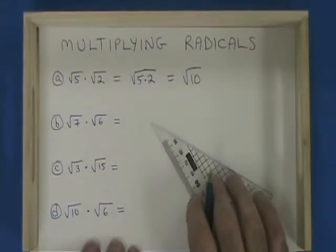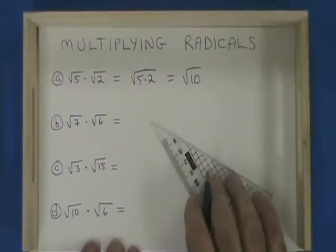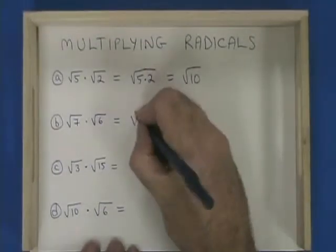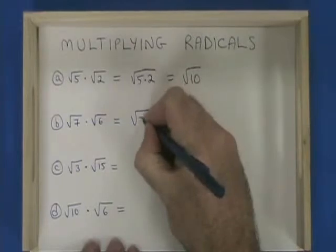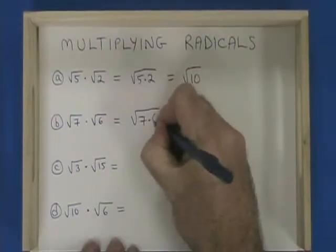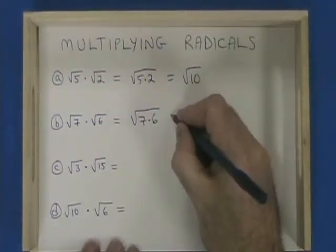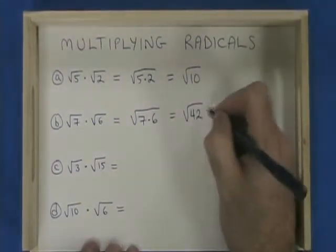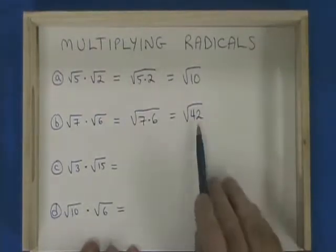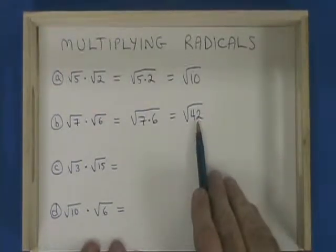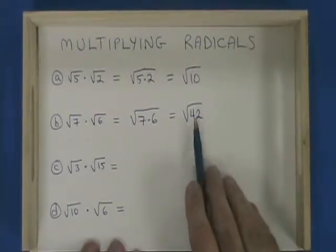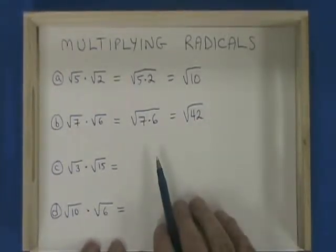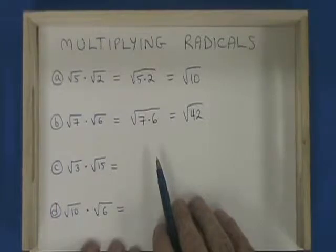Root 7 times root 6 is therefore the square root of 7 times 6, which is the square root of 42. We cannot simplify this further because 42 does not have any factors that are a perfect square.